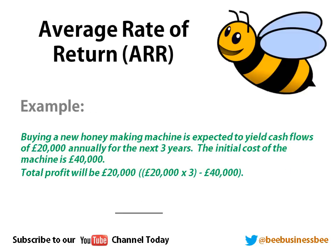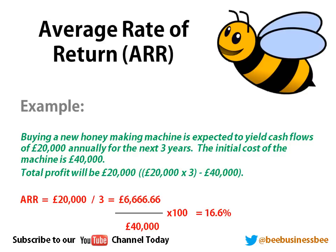Here's an example — let's put all the numbers in. I am going to buy a new honey making machine. It's going to yield cash flows of £20,000 annually for the next 3 years. The initial cost to buy the honey making machine is £40,000. The total profit is going to be £20,000 — that's £20,000 each year times 3, so £60,000 minus a £40,000 initial cost means I'm going to make £20,000.